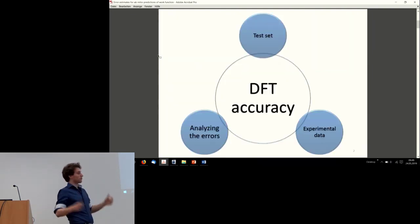All right, so we're going to do a DFT accuracy study. What do we need? First of all we need a test set, we need to decide what kind of DFT calculations we're going to do, we need experimental data—this speaks for itself—and lastly we need to analyze these errors. That's what I'm going to talk about.